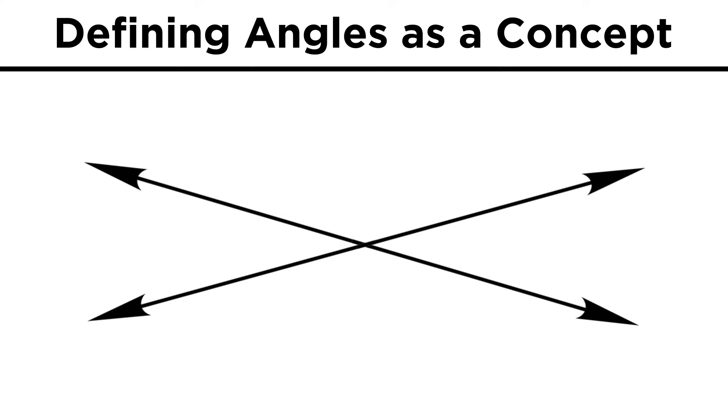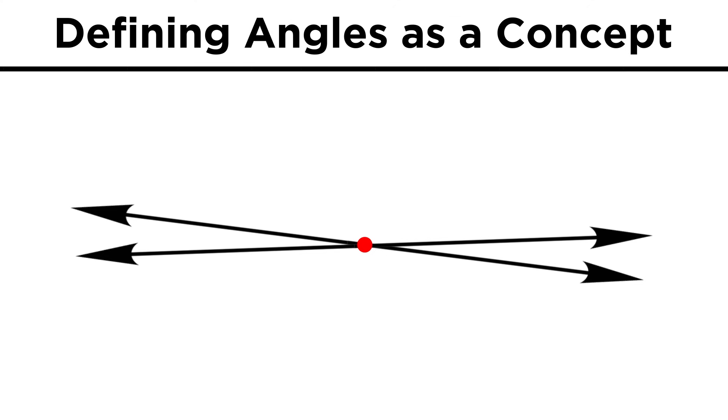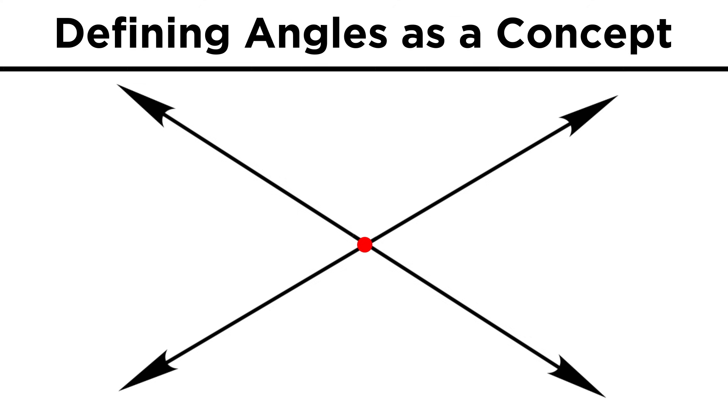Now we know what lines are, so let's draw a few. Here are two lines, and they cross at this point. But in what way do they cross? Do they approach one another slowly and then diverge slowly, or is it more rapid? In asking this question, we are asking about the angle between the lines.